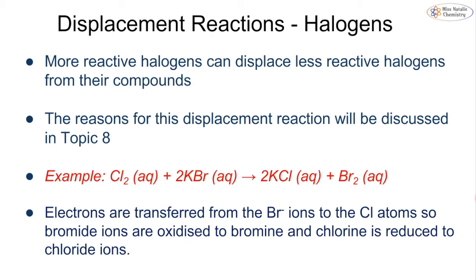Displacement reactions can also happen with the halogens, again where a more reactive halogen displaces a less reactive halogen. Remember, fluorine is the most reactive, followed by chlorine, then bromine, then iodine. So chlorine would be able to displace bromine, but bromine could not displace chlorine. You covered this in IGCSE when you did the Group 7 topic. We'll discuss this further in topic 8 when we look at oxidation and reduction reactions. An example is shown here: chlorine gas displacing the bromine from potassium bromide compound to make potassium chloride and bromine as an element. The electrons are being transferred from the bromide to the chlorine atoms to allow them to oxidise, and the chlorine is reduced to chloride ions.